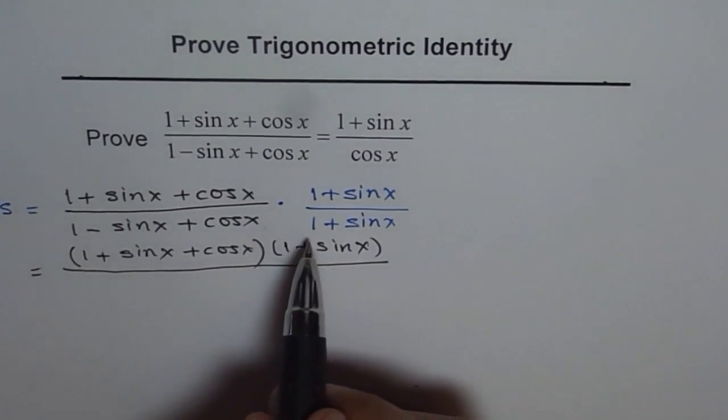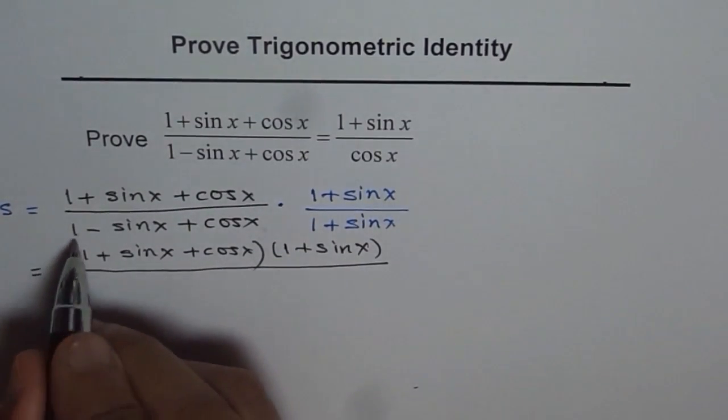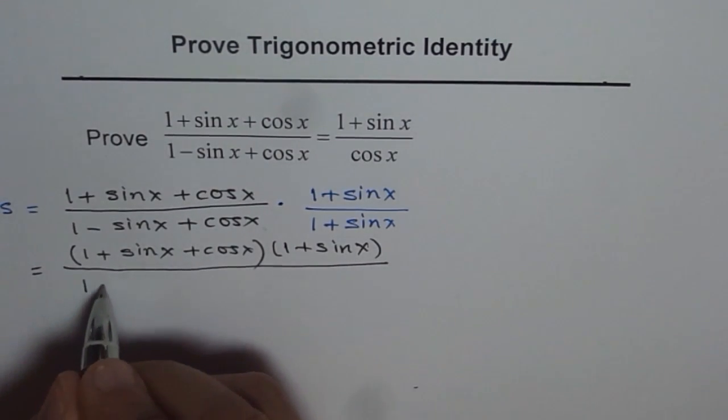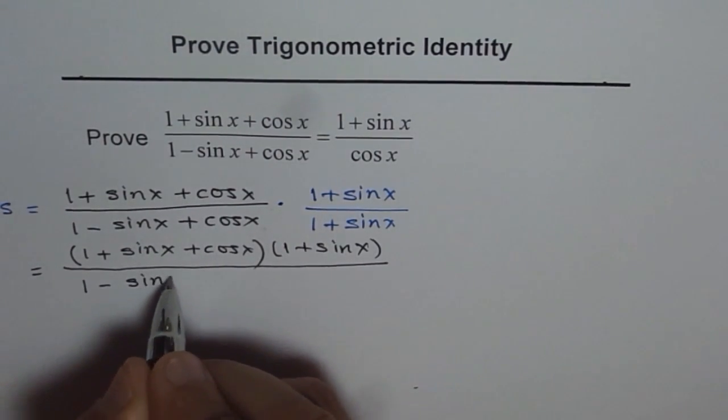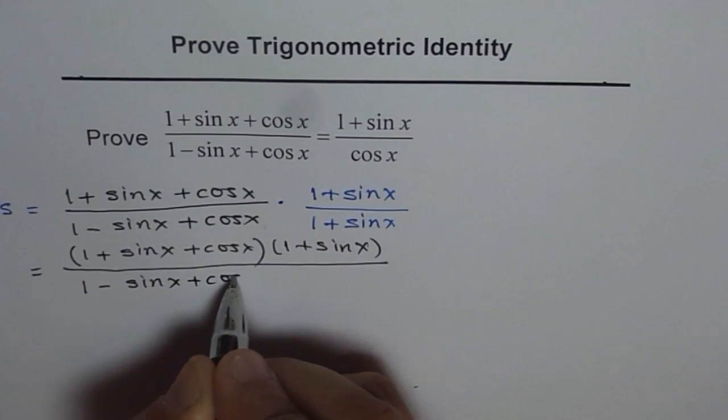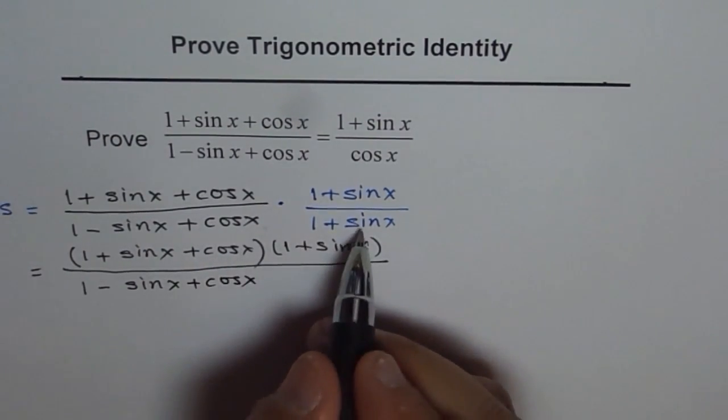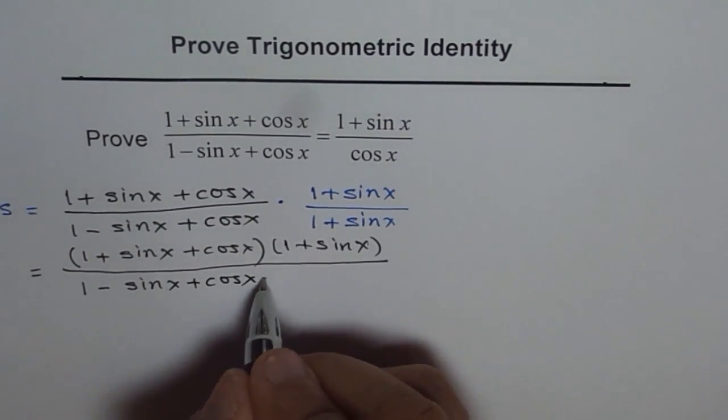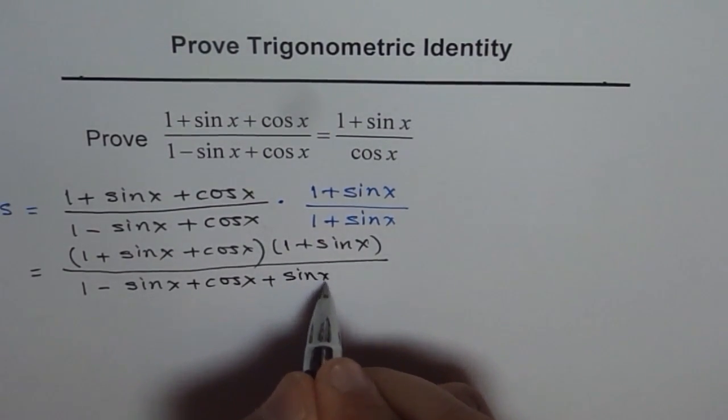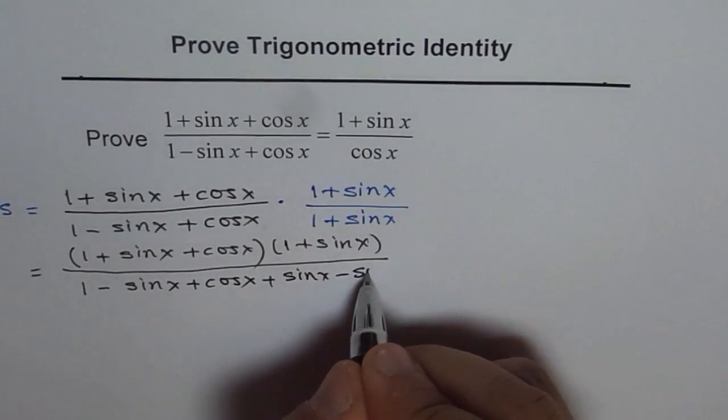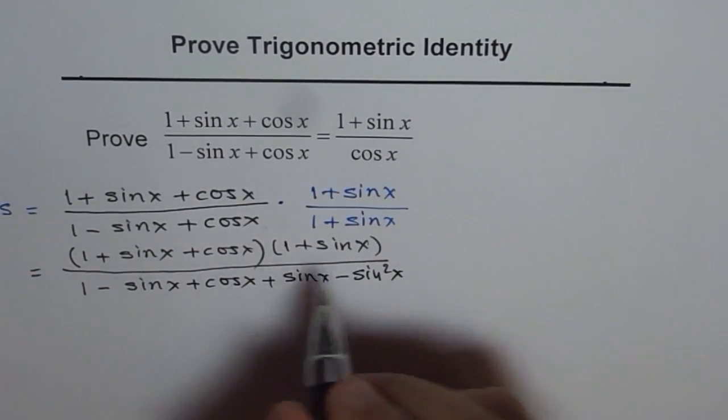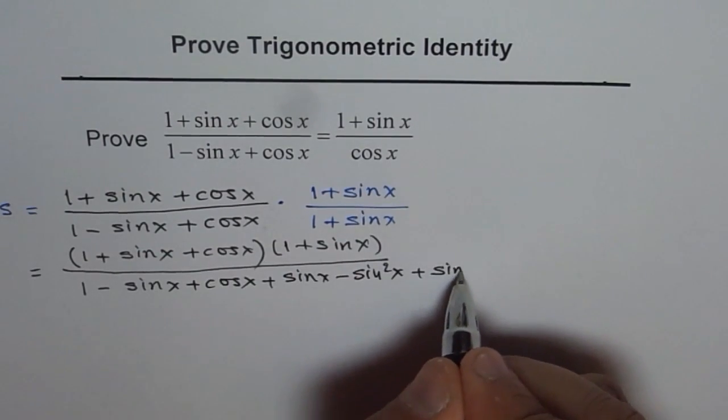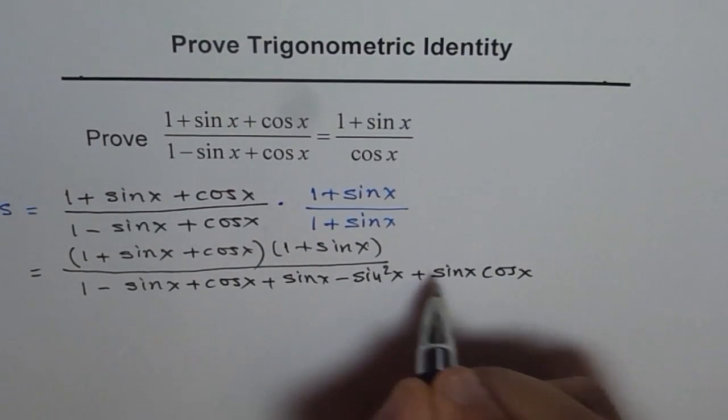Let's do it with 1 first. When you multiply by 1, you get 1 - sin x + cos x. Now multiply by sin x. You get sin x - sin² x + sin x cos x.